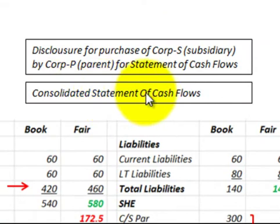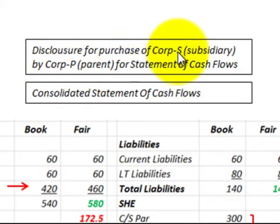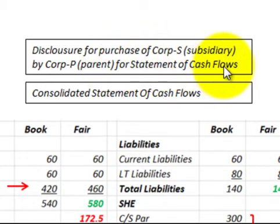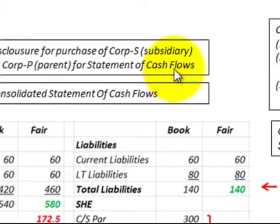Here we're going to be looking at a consolidated statement of cash flows and the disclosure of purchase for this consolidated statement of cash flows. What I mean by the disclosure of purchase is where a parent corporation is going to go out and buy a subsidiary corporation. For the consolidated statement of cash flows, there has to be a disclosure of this purchase.